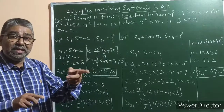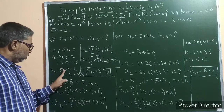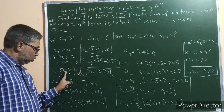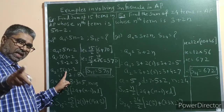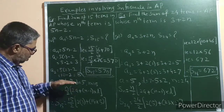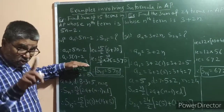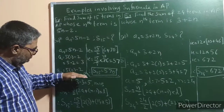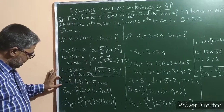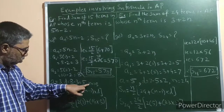Now to find d, let us find the value of the second term a2. Replace n by 2: a2 = 5(2) − 2 = 10 − 2 = 8. So the second term is 8. If you subtract the first term 3 from 8, you get the common difference d. Hence a = 3, d = 8 − 3 = 5.